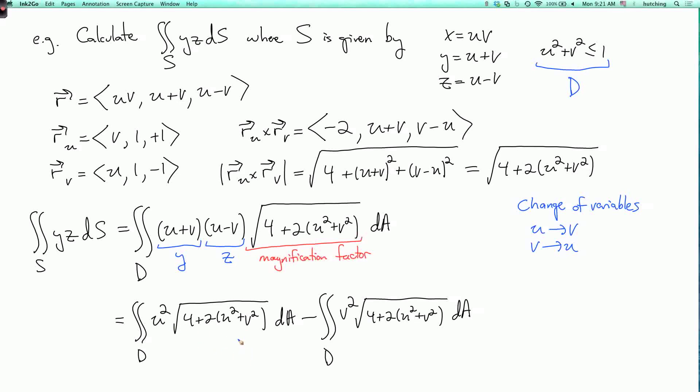So there's a change of variables where u turns to v and v turns into u. The integrand will turn one integrand into the other integrand. And there's no magnification factor because the Jacobian of v, u with respect to u, v is the determinant of 0, 1, 1, 0, which is minus 1. So the absolute value is 1. So the magnification factor is 1. And the domain D is symmetric under switching u and v. So if you switch which is u and which is v, the domain stays the same. So the upshot is that if you do this change of variables, then because the magnification factor is 1 and the domain D stays the same, this converts one integral into the other.